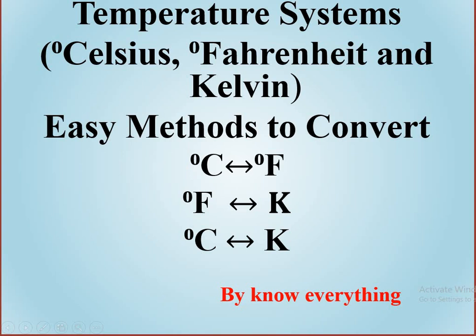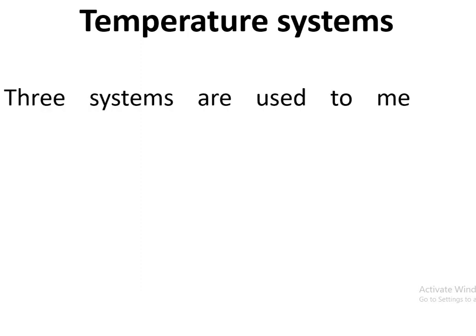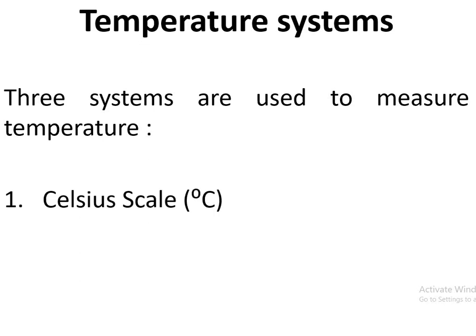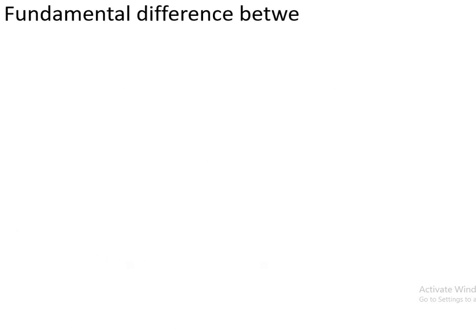Temperature systems: degree Celsius, degree Fahrenheit, and Kelvin, and easy methods to convert each of them. Let's discuss the temperature systems. Generally, three systems are used to measure temperature. The first one is the Celsius scale, where temperature is measured in degree Celsius. The second is the Kelvin scale. The third is the Fahrenheit scale, where temperature is measured in degree Fahrenheit.